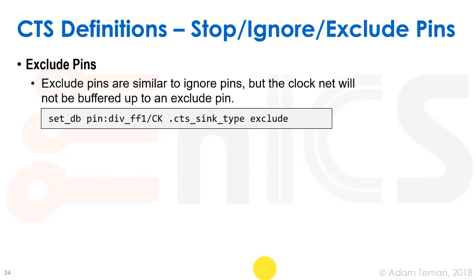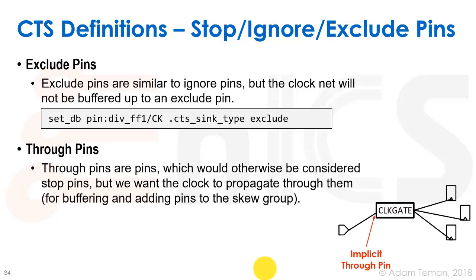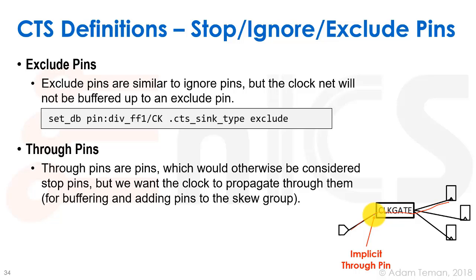An exclude pin is similar to an ignore pin, but the clock net will not be buffered up to an exclude pin at all. There may be reasons to fully exclude a certain pin from the clock tree. Finally, there is something called a through pin — a pin that would otherwise be considered a stop pin, such as the clock input of a clock gate, but where we want the clock to propagate through it. In newer versions of Novus this has been removed and is now handled as an ignore pin, though it can still be referred to as a through pin.